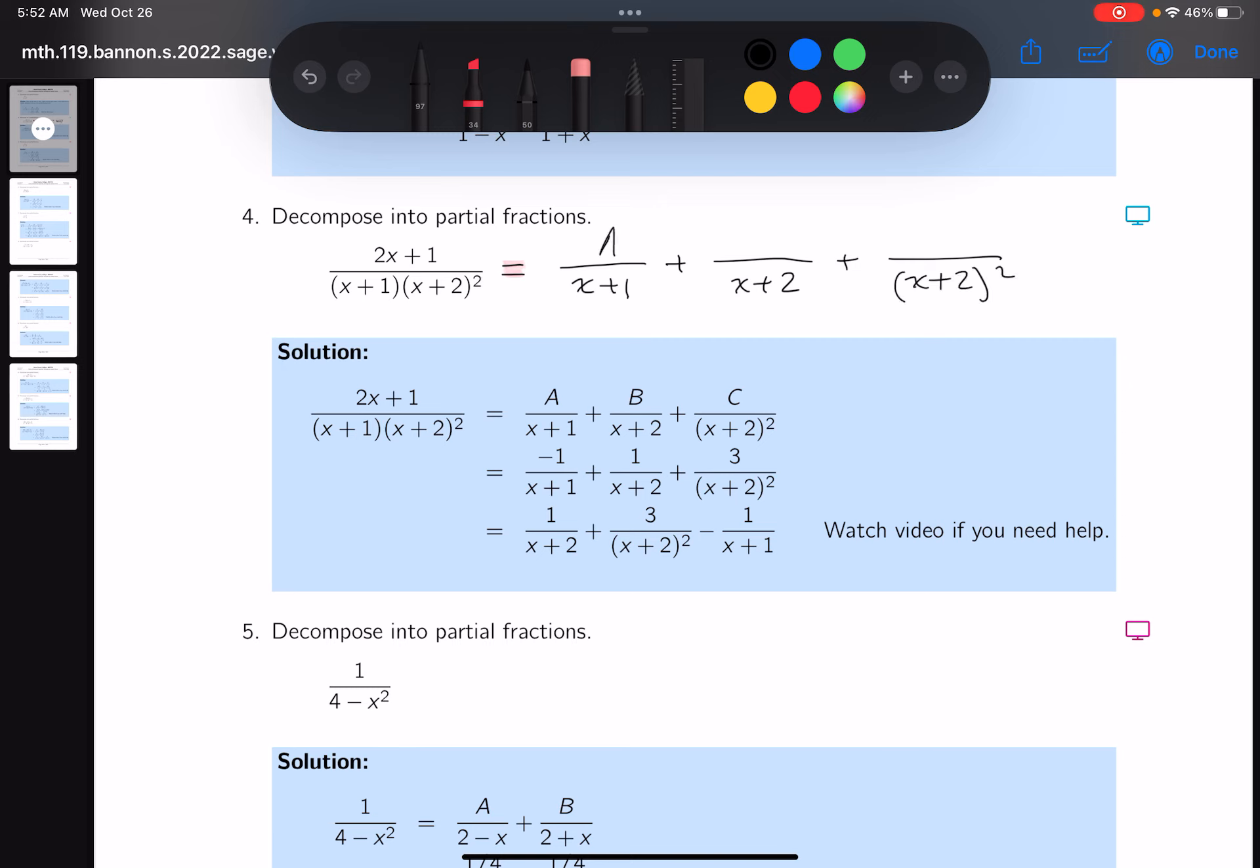What I do now is multiply both sides by the LCD and you're going to get 2x+1 equals A, well let's see, you'd get (x+2)².